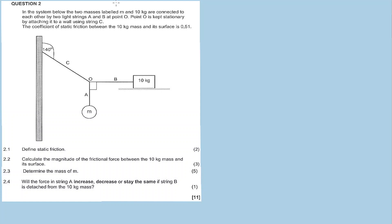This recording is a discussion of question 2 from the common test, September 2018. Question 2 covers static vectors. In the system below, two masses labeled M and 10 kilograms are connected to each other by two light strings A and B at point O. String A is connected to M, string B is connected to the 10 kg mass, and point O is kept stationary by attaching it to a wall using string C.